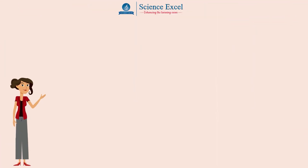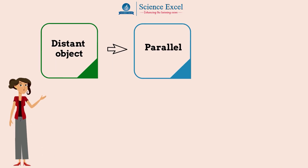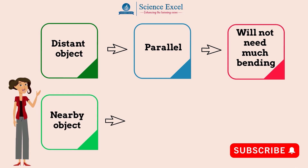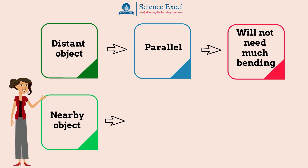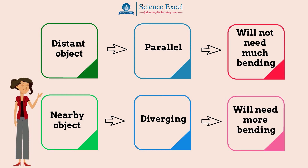Light rays coming from an object in the distance will be almost parallel to one another — they will not need much bending. Whereas light rays coming from a nearby object are diverging, or going away from one another, and hence will need more bending in order to focus.